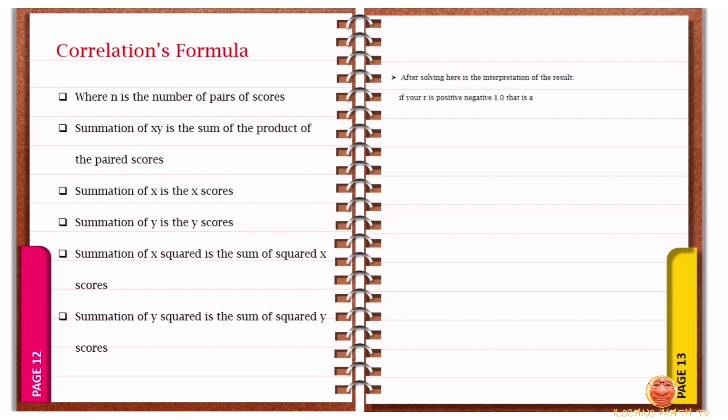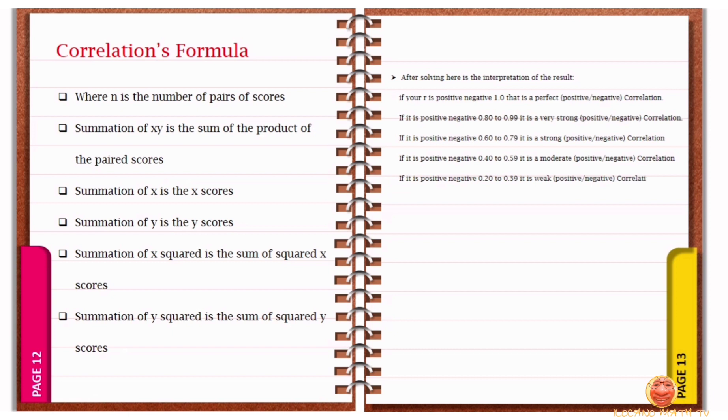If your R is positive-negative 1.0, that is a perfect positive-negative correlation. If it is negative 0.80 to 0.99, it is a very strong positive-negative correlation. If it is positive-negative 0.60 to 0.79, it is a strong positive-negative correlation. If it is positive-negative 0.40 to 0.59, it is a moderate positive-negative correlation. If it is positive-negative 0.20 to 0.39, it is a weak positive-negative correlation. If it is negative 0, it is no correlation at all.